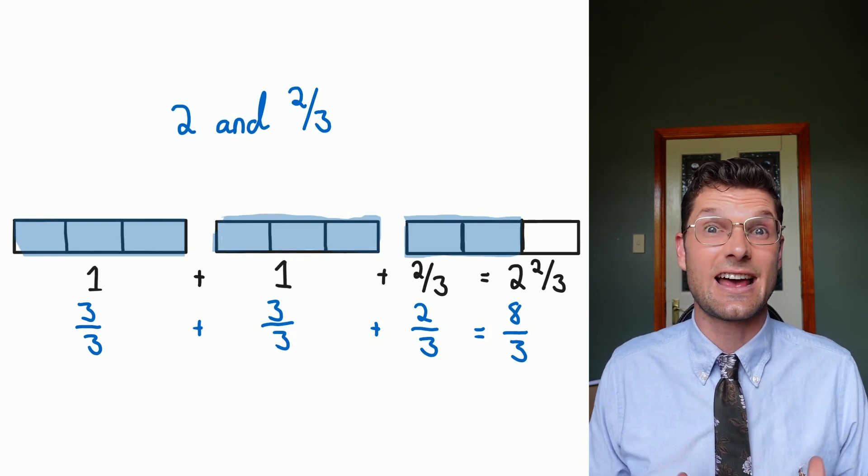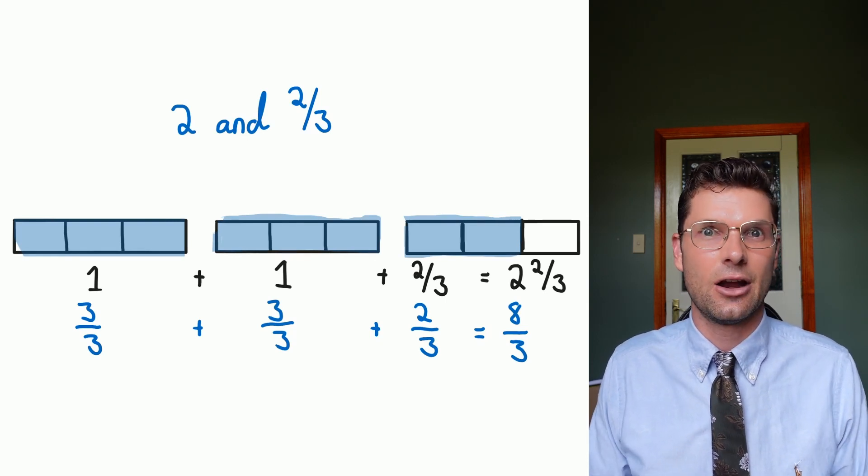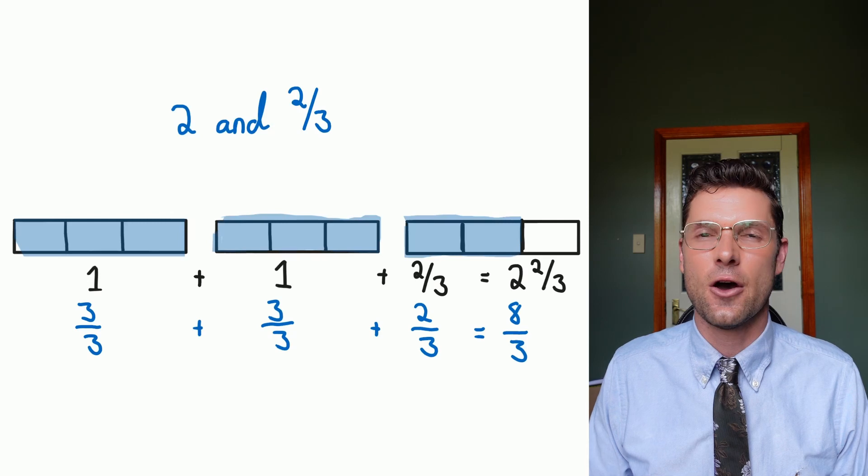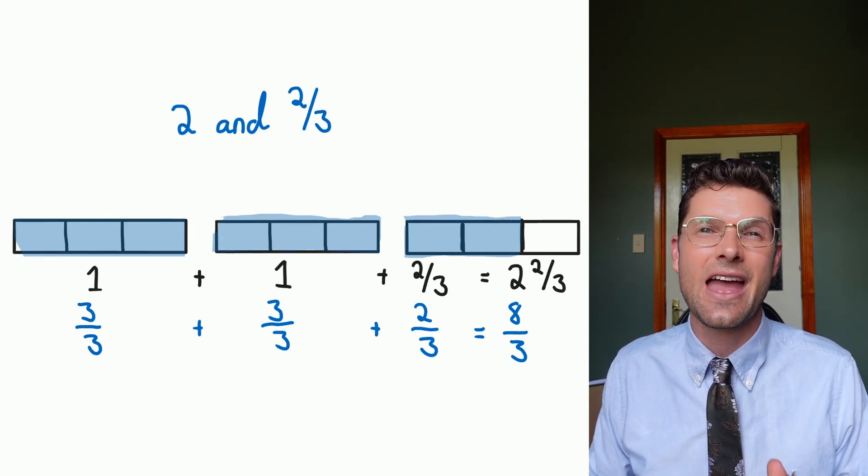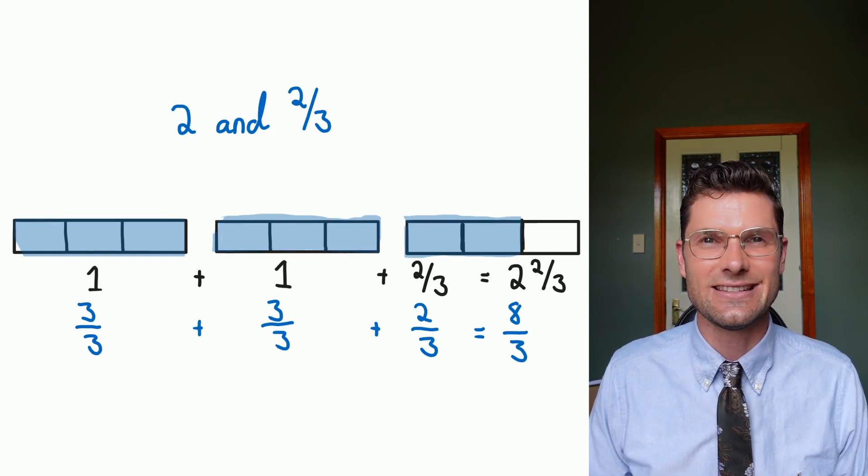Both of these things are saying the exact same thing. Two and two thirds and eight over three are exactly the same. So how do I convert between these two numbers? That's what we're gonna look at in today's lesson.